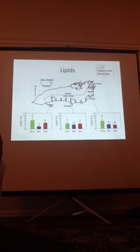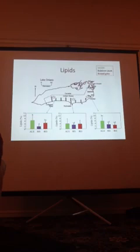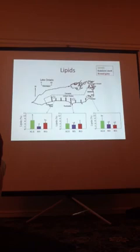Looking at just the lipids for all the prey samples so far, at the 9-mile point and Rochester transects there wasn't really a significant difference among species, but at the 30-mile point there was a significant difference, with alewife having the most lipid content, followed by round goby, and rainbow smelt having the least. But in general, on average, alewife had a little bit higher lipid content than the other two species.